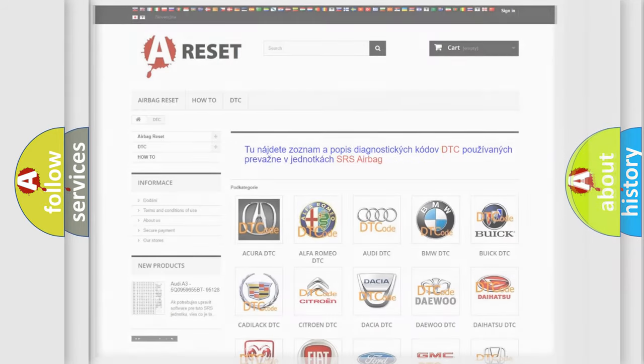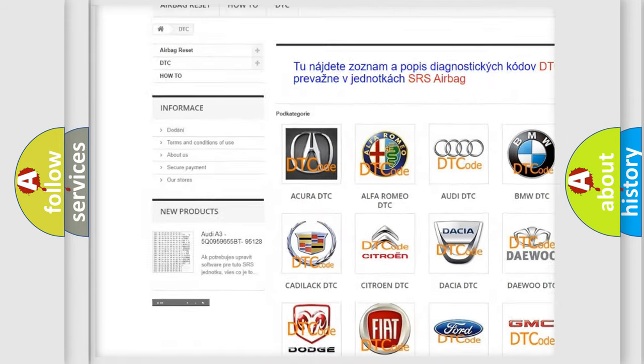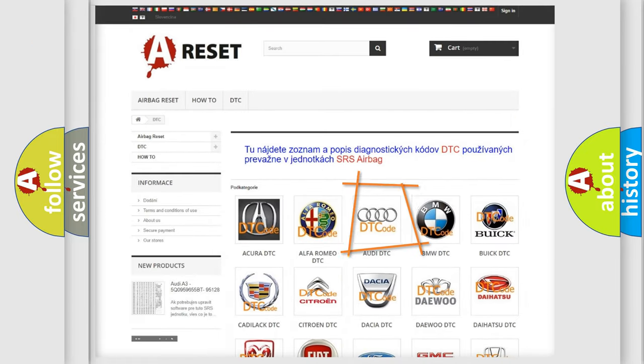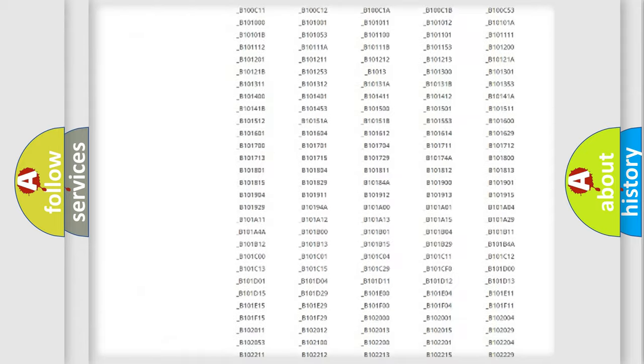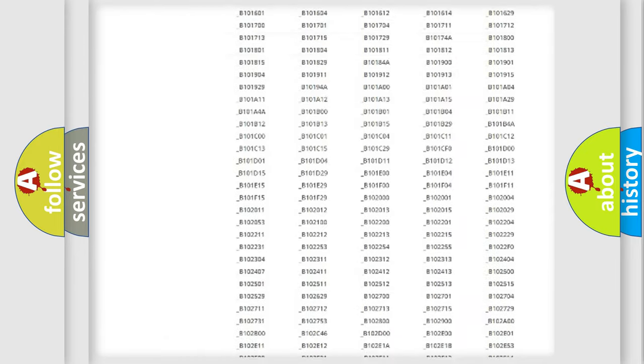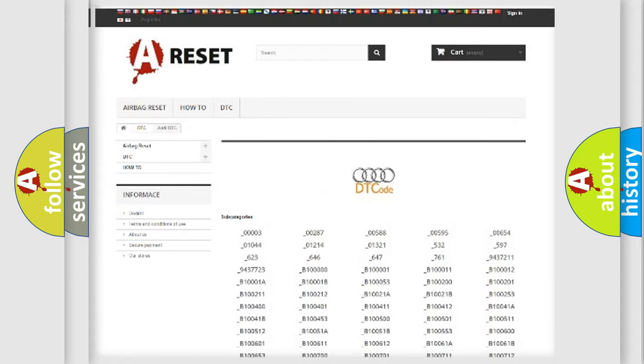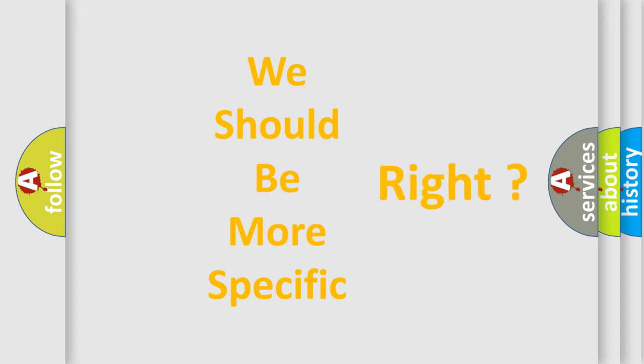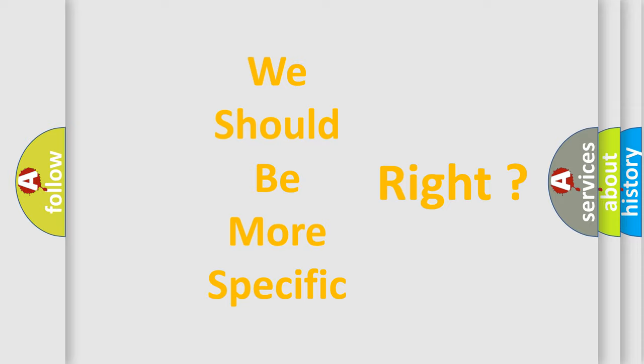Our website airbagreset.sk produces useful videos for you. You do not have to go through the OBD2 protocol anymore to know how to troubleshoot any car breakdown. You will find all the diagnostic codes that can be diagnosed in Audi vehicles, and many other useful things. The following demonstration will help you look into the world of software for car control units.